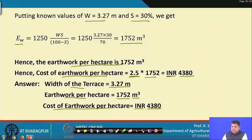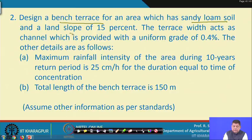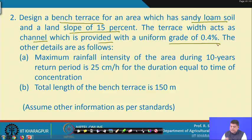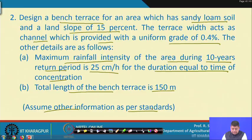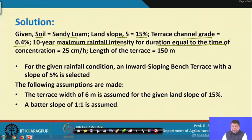Problem 2: Design a bench terrace for an area with sandy loam soil and land slope of 15 percent. The terrace width channel is provided with a uniform grade of 0.4 percent. Maximum rainfall intensity for 10-year return period is 25 centimeters per hour for duration equal to time of concentration. Total length of bench terrace is 150 meters. Assume other information as per standards.